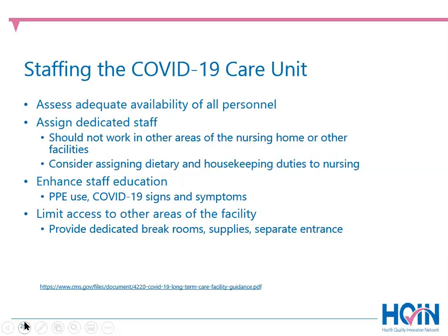You'll need to assess your on-site and remote staffing capabilities to assure adequate clinical and non-clinical staff with required training skills and competencies for staffing the COVID care unit. Assigned and cohorted staff should not work across other units, floors, or facilities. If your facility does not have enough ancillary staff to dedicate to the COVID care unit, nursing staff may need to perform housekeeping and dietary tasks, so they will need education in those areas. Whenever possible, integrate consistent assignment of staff to specific residents with the goal of decreasing the number of staff-resident interactions. Staff access between the COVID unit and the rest of the facility should be limited as much as possible, accomplished by providing a separate entrance and dedicating break areas and supply rooms.